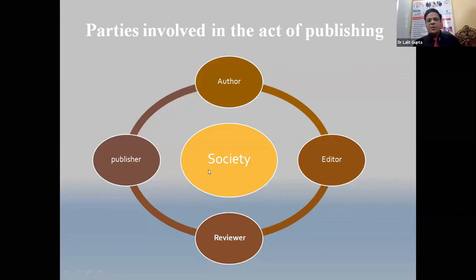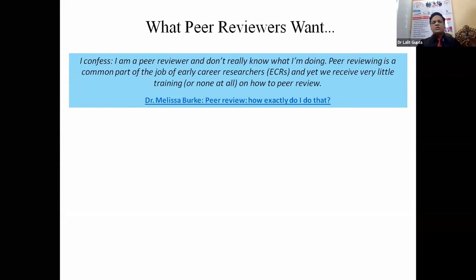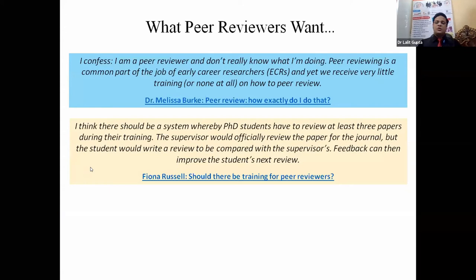Who are the parties involved in the act of publishing? From the society, an author arises, sends to the editor, the editor sends it to a reviewer, and the reviewer gives a yes or no, which goes back to the editor, then becoming a published or rejected paper. Regarding what a peer reviewer wants — some well-known personalities say, 'I confess I am a peer reviewer and I don't really know what I am doing.' Peer review is a common part of the job for early career researchers, yet we receive very little training on how to peer review. I think PhD students should review at least three papers during their training, and supervisors should write papers so that students can write reviews for feedback.